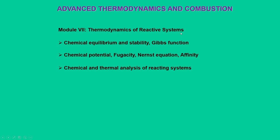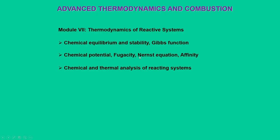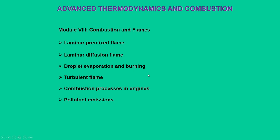Module 7 covers thermodynamics of reaction systems. When a reaction takes place, it may be stable, unstable, or reach chemical equilibrium — all quantified through the Gibbs function, which was introduced in module 3. Additional topics include chemical potential, fugacity, Nordic equations, affinity, and chemical and thermal analysis for reacting systems.